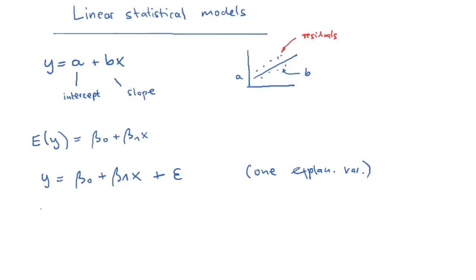For more than one explanatory variable, we will write the equation like this: y equals beta0 plus beta1x1 plus beta2x2 plus dot dot dot plus errors.